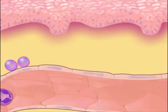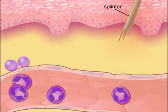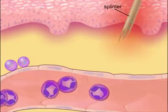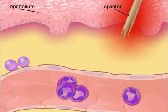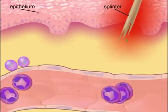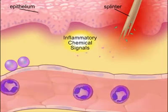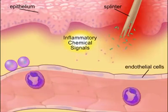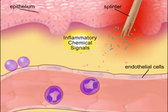The inflammatory response is an important, nonspecific defense against tissue damage. It begins when injured tissue cells release chemical signals that activate the endothelial cells of nearby capillaries.